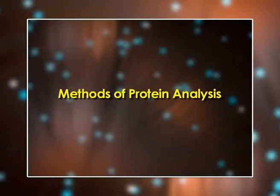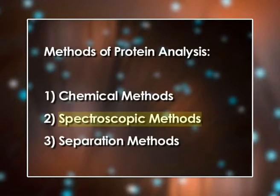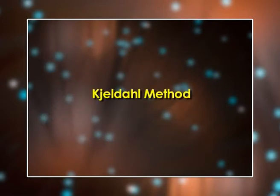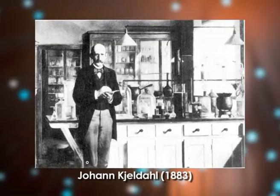Now coming to methods of protein analysis. These include chemical methods, spectroscopic methods and separation methods. The first chemical method is the Kjeldahl method, developed in 1883 by a brewer called Johan Kjeldahl. A food product is digested with a strong acid so that it releases nitrogen, which can be determined by a suitable titration technique.